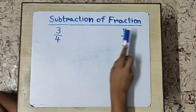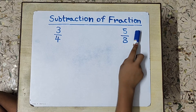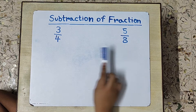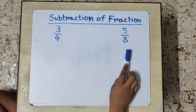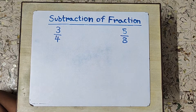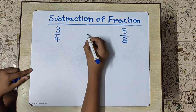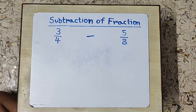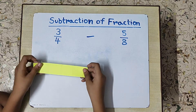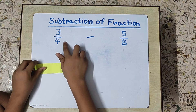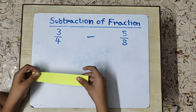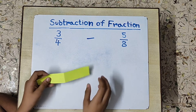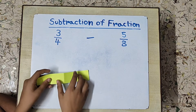Subtraction of fractions. I have taken these two numbers: 3 by 4 and 5 by 8. Now we will subtract. For subtracting, the first step is to take a paper strip. As the denominator is 4, we will fold this paper strip into 4 equal parts to represent 3 by 4.